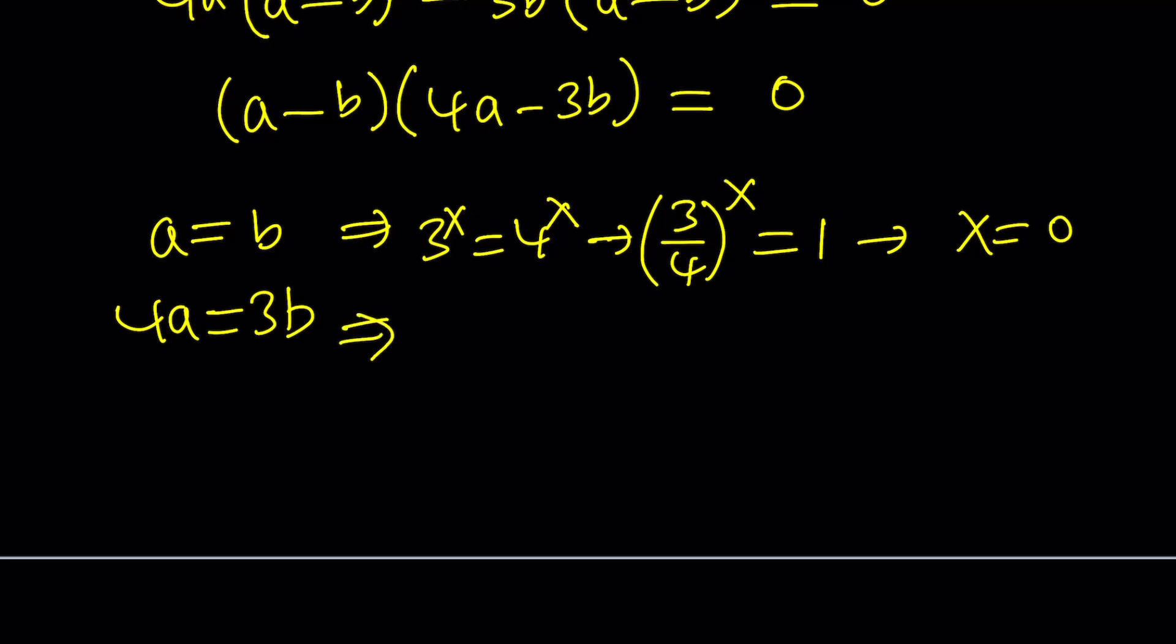And from 4a equals 3b, we basically get something like this. 4 times 3 to the power x equals 3 times 4 to the power x. Notice that the 4 and the 3 are switched around. But if you divide, again, you're going to get 3 over 4 to the power x equals 3 over 4, which is solvable at x equals 1. Great. So we got two solutions. They're both real solutions.